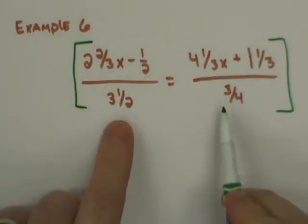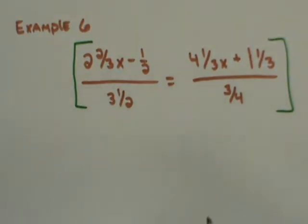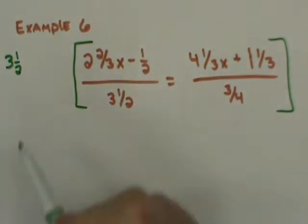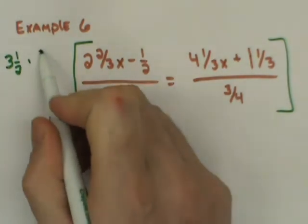When I'm looking at these two fractions, I'm not going to waste time trying to figure out what the common denominator is. I'm just going to take both parts. In other words, I'm going to multiply this by 3 and 1 half, that's the first denominator, and by 3 fourths.